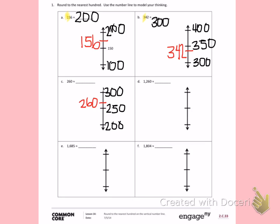260 is about here on the number line. If I look at my number line, 260 has gone past the halfway number, so I will round 260 up to the nearest hundred, which will mean 300.